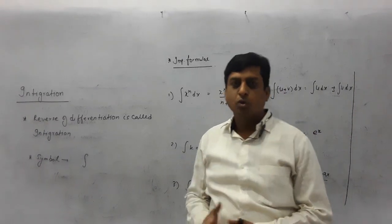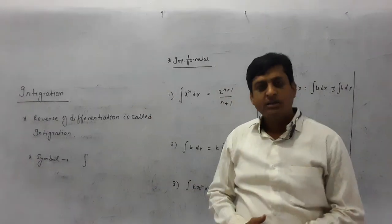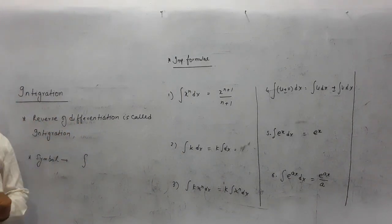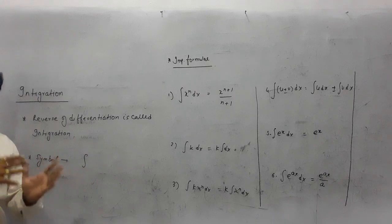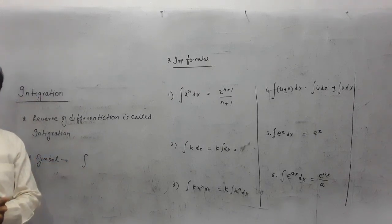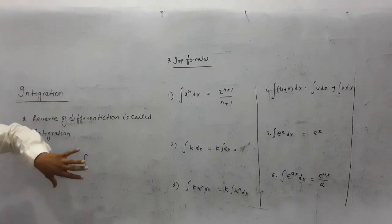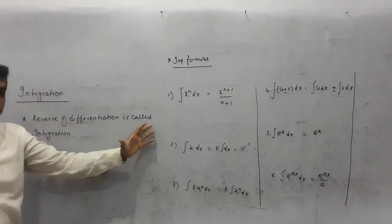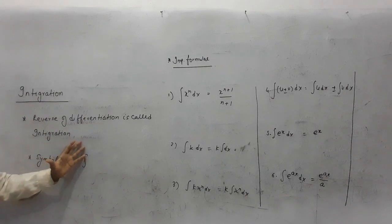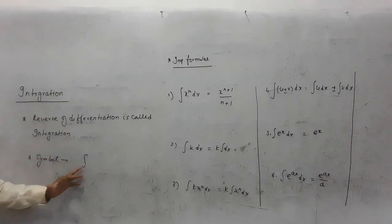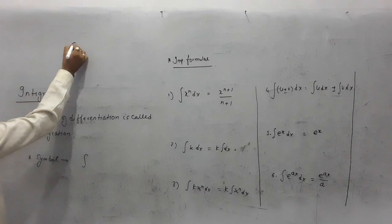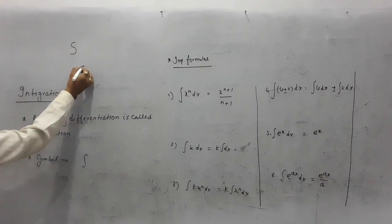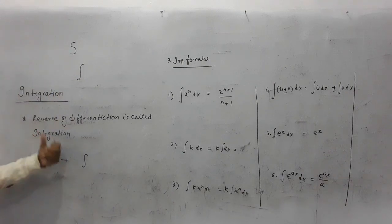Now the differentiation part is over. The next part is integration. Integration is the reverse of differentiation — whatever process you were doing in differentiation, you do the reverse to get integration. The symbol of integration looks like an elongated S. When writing it, don't curve it too much — just a gentle curve. This is the integration symbol.